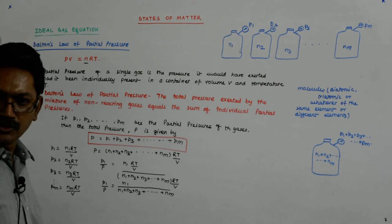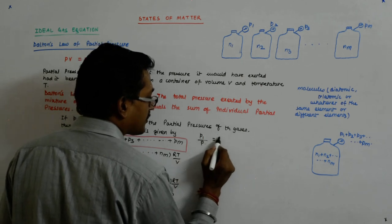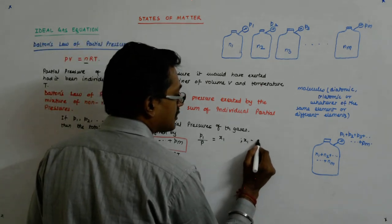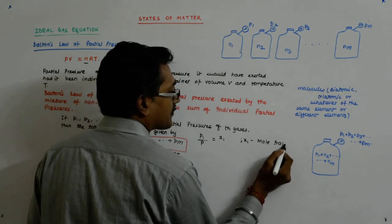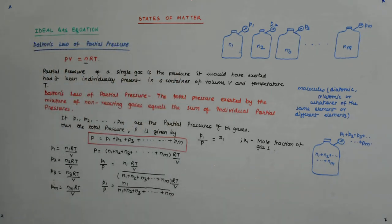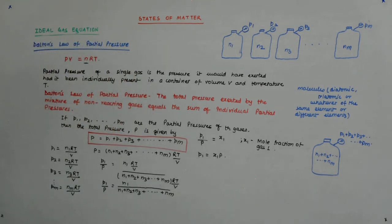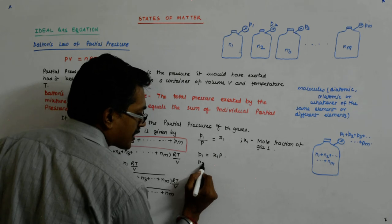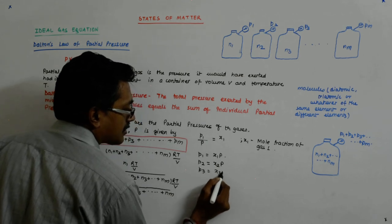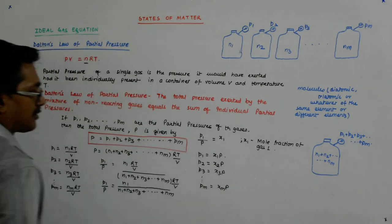And what is this? This is the mole fraction. So I get that P1 upon capital P equals X1, where X1 is the mole fraction of gas 1. So what do we get? We get that P1 equals X1P. And what is P2? What should be P2? X2P. What should be P3? X3P. And what should be Pm? It should be XmP.